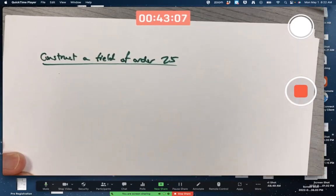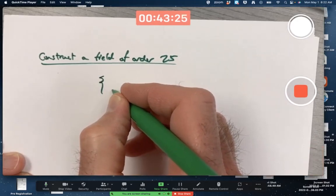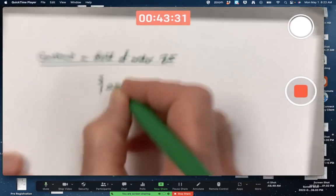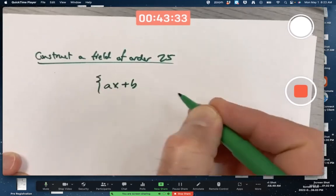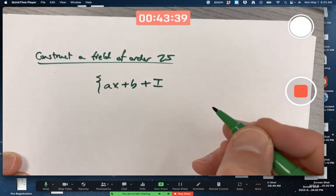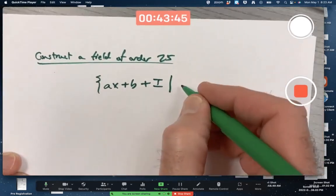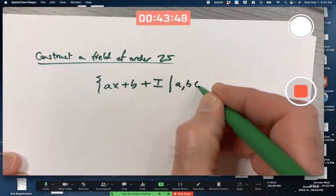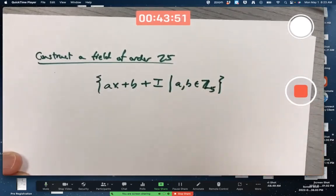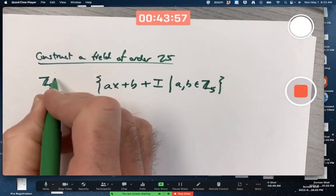First thing you realize is the way to do this is to make it as a factoring. A factoring of the form, well, if it's going to have order 25, the representatives must be linear polynomials, ax plus b. It's going to be a factoring, so I'm going to add on some ideal. How do you create such a factoring?